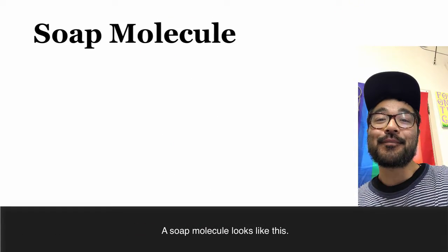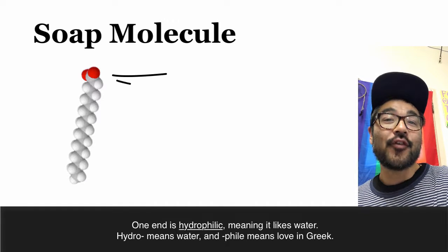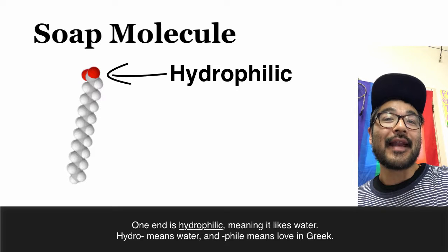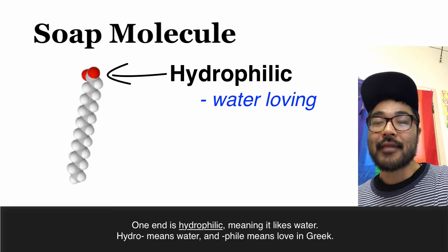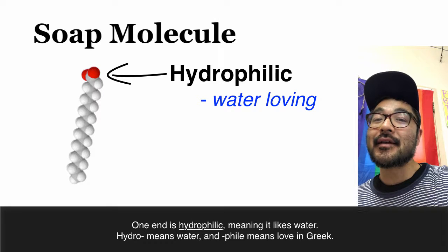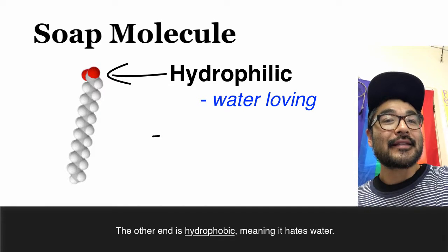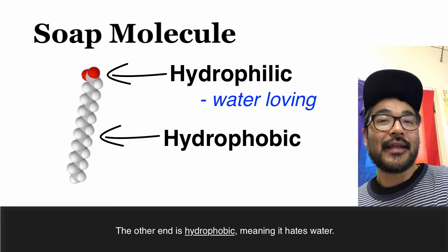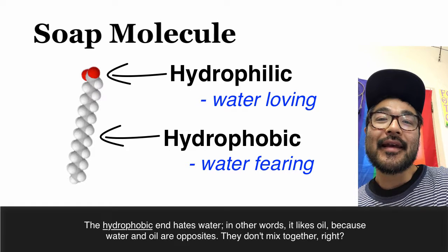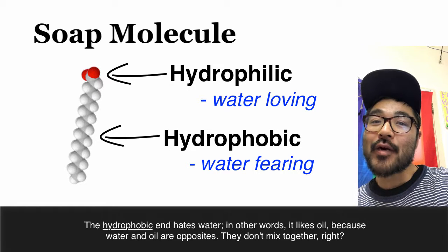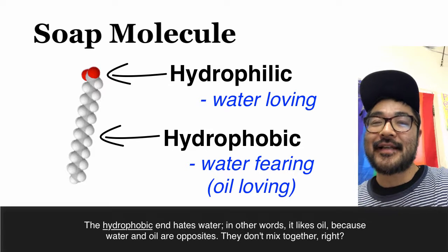A soap molecule looks like this. One end is hydrophilic, meaning it likes water. Hydro means water and phile means love in Greek. The other end is hydrophobic, meaning it hates water. In other words, it likes oil because water and oil are opposites.